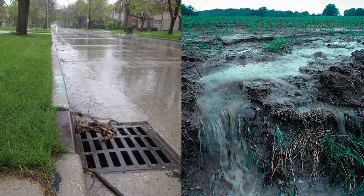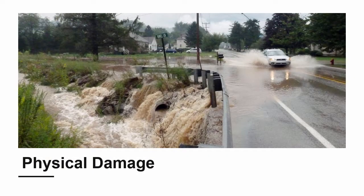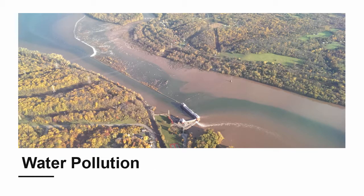Stormwater harms local creeks, rivers, and lakes in two major ways. It causes physical damage like flooding, erosion, and loss of fish habitat. And it causes water pollution because stormwater often contains harmful material like the brown sediment in this image, where a muddy stream is mixing with the relatively clear water of the Susquehanna River.